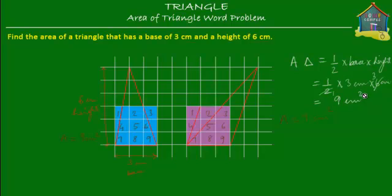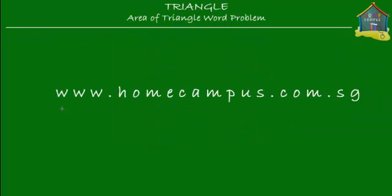The formula also gives us the same answer: the area of this triangle with a base of three centimeters and a height of six centimeters is nine centimeters squared. That's all about this problem. I hope you've understood it, and I hope you'll go and solve some other problems at www.homecampus.com.sg. Don't forget to practice because practice makes perfect. This is M signing off for now. Bye-bye.